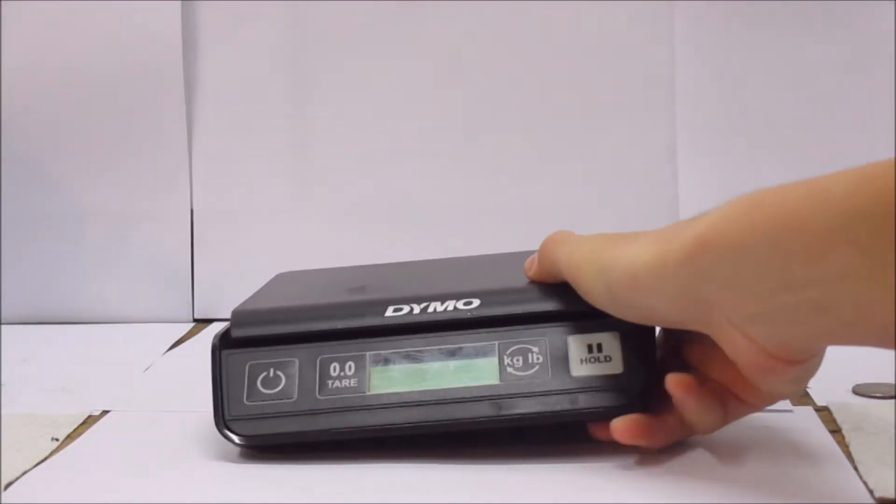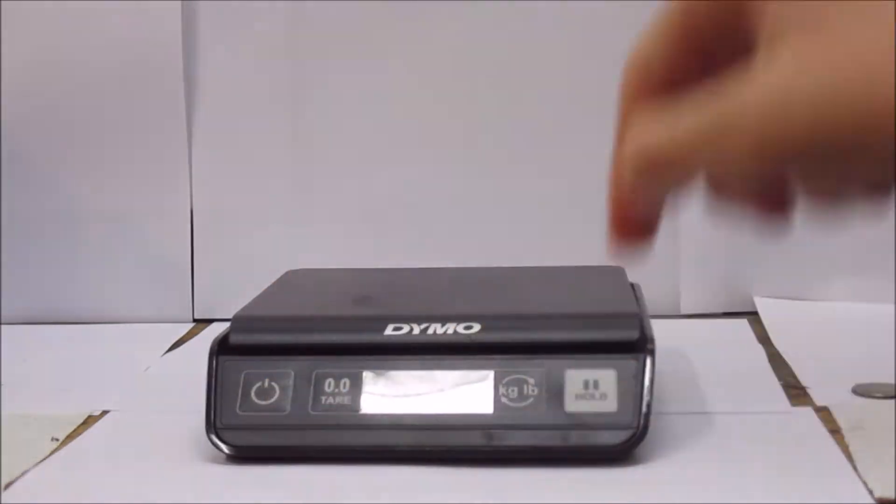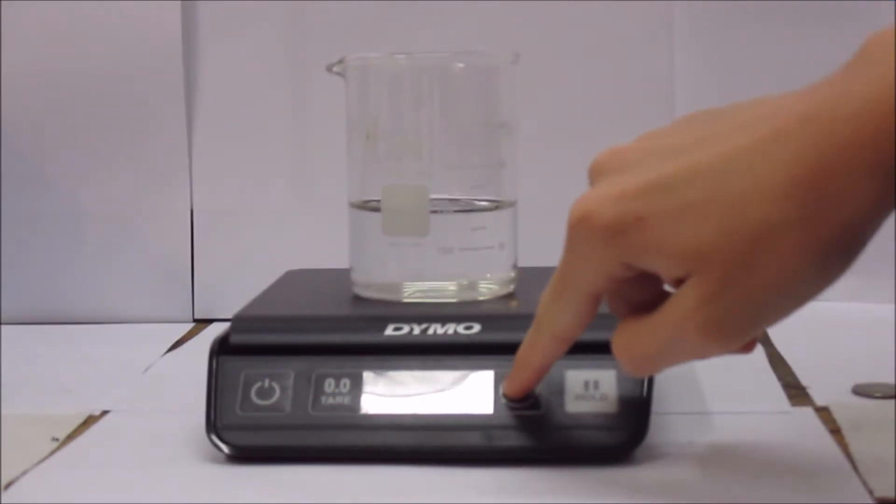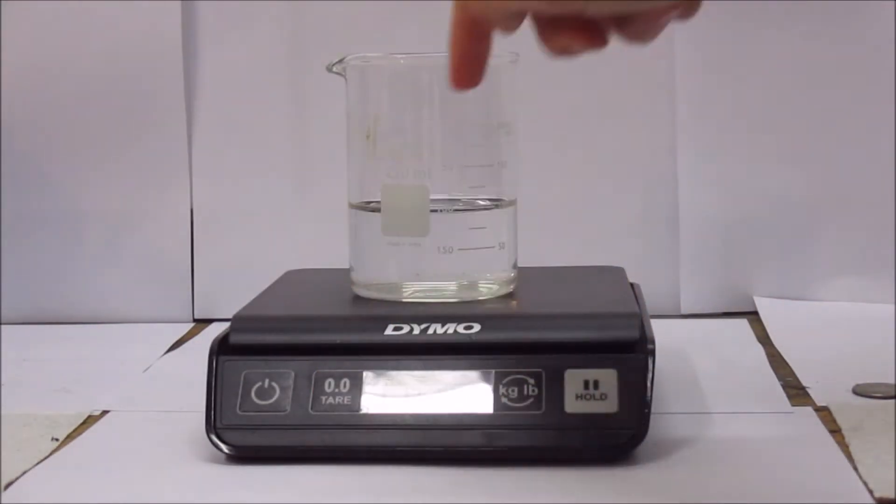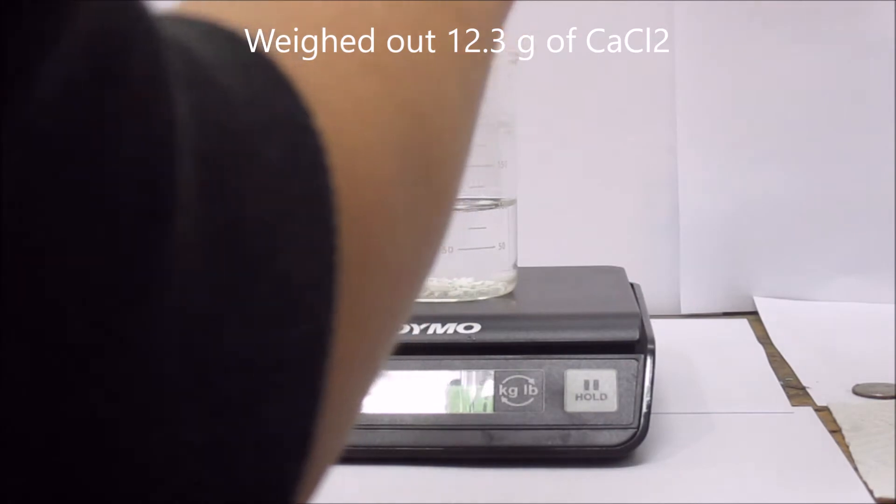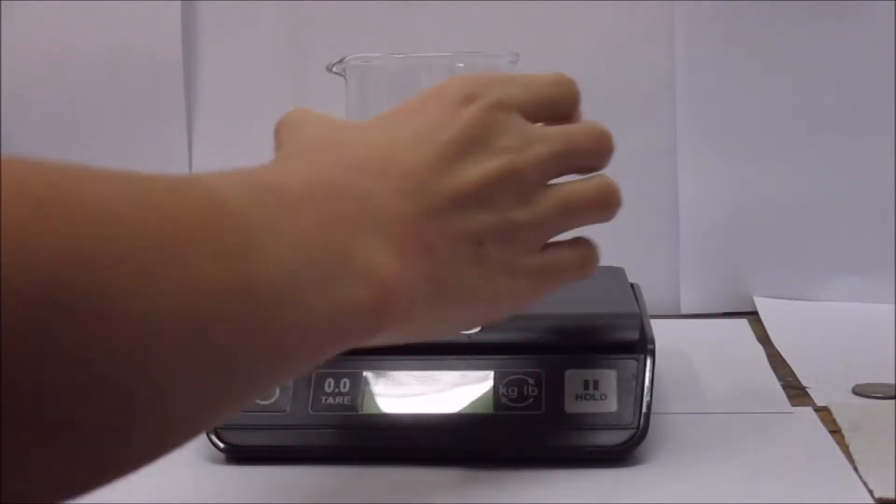Then I got out my scale. I placed the beaker on the scale. I then weighed out 12.3 grams of the calcium chloride. After that was done, I took it off the scale.